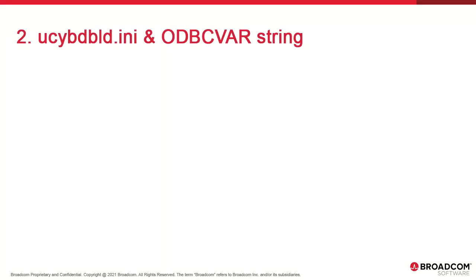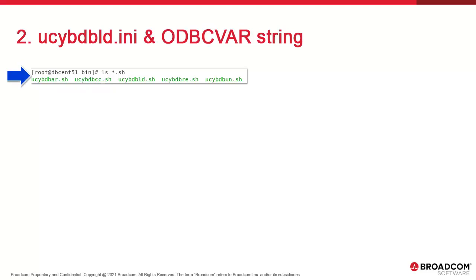Let's look at the contents of the utility directory. Running ls *.sh produces the utility shell scripts. The last two characters of the file name tell you what they do: ucbdb_ar is archive, ucbdb_cc is client copy, re is reorg, and ld is load. Other utilities like db change don't have a matching .sh because they work differently.